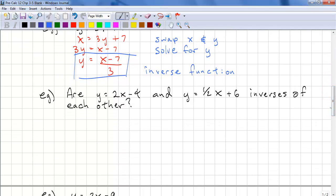Another question that you might get is, are y equals 2x minus 4 and y equals 1 half x plus 6 inverses of each other? Well, you need to find the inverse of 1 and then just see if it's equal to the other one. So let's do x equals 2y minus 4, then solve for y. 2y equals x plus 4. y is equal to x plus 4 over 2. And clearly that does not equal y is equal to 1 half x plus 6. So they are not inverses of each other.